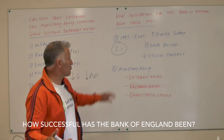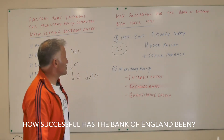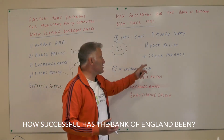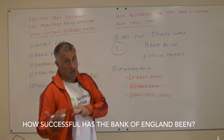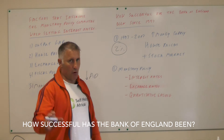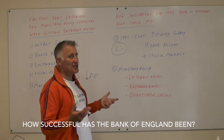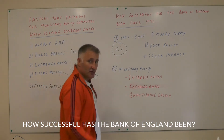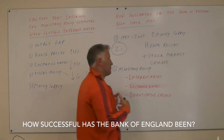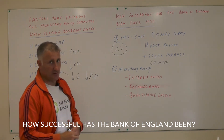Everyone said the monetary policy committee was doing a remarkable job controlling inflation at two percent, but part of the reason was that the inflation definition excluded house prices — which almost trebled in some parts of the UK — and the stock market was going haywire. On top of that, China was producing loads of cheap goods flooding into the UK economy, which also helped to keep measured inflation low.